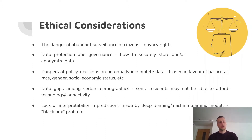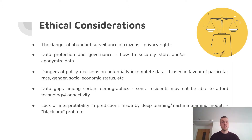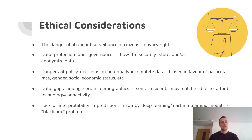Ethical considerations. The danger of abundance surveillance of citizens is an obvious problem. Data protection — how do you securely store and anonymize the data of citizens in the urban environment? There's also the danger of making policy decisions when you might not have the whole story — maybe data favors a particular race, gender, or class of people, which is very dangerous. Data gaps is a very related point: some residents might not have the technology or connectivity to contribute their thoughts, and data might just not be getting generated for these people.